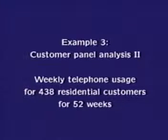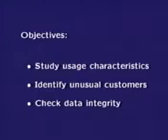The data in example three are based on telephone records for 438 residential customers that were part of the control group in an advertising effectiveness study. For each customer, we have a time series of weekly intra-LATA telephone usage corresponding to the 52 weeks of the trial. As in the other examples, usage is measured by the number of calls made. The objectives are the same as in example two: to understand usage characteristics, identify and mark unusual customers, and in the process to check data integrity.